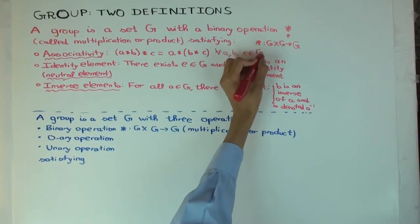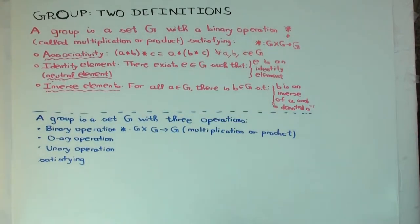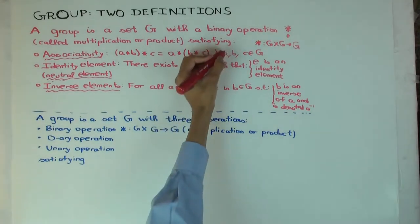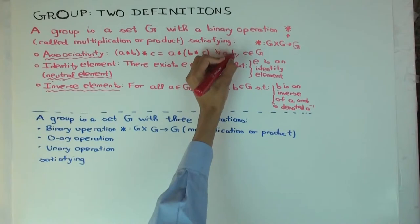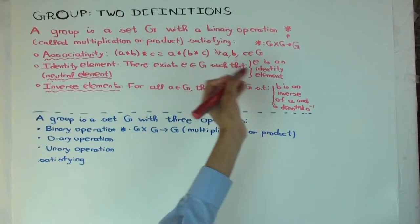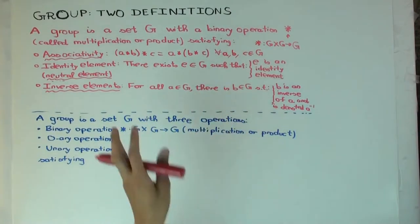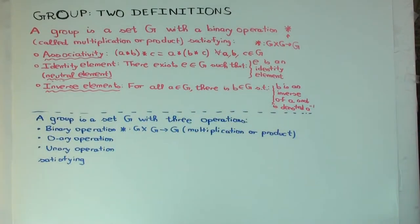When I write 'for all a, b, c in G', I do allow a, b, and c to be equal. So I could have two of them equal and the third different, or all of them equal, or all of them different, or whatever.